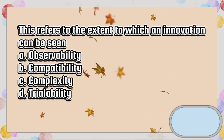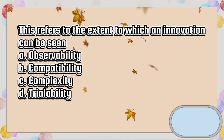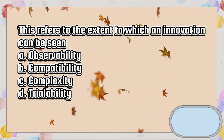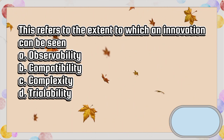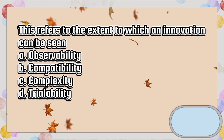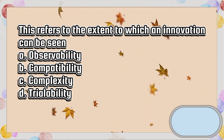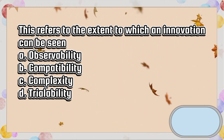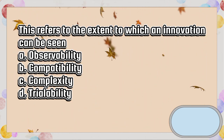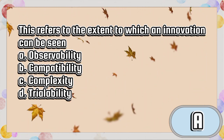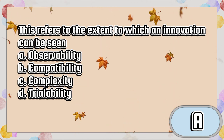This refers to the extent to which an innovation can be seen. A. Observability. B. Compatibility. C. Complexity. D. Trialability. The answer is letter A.